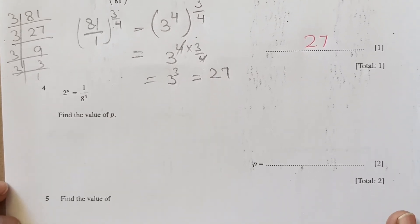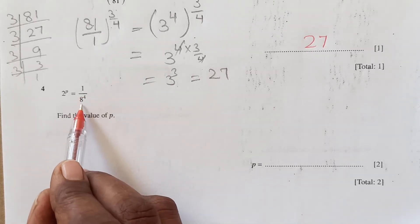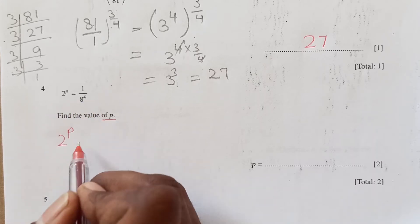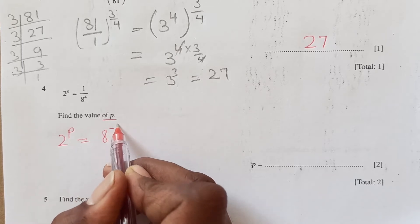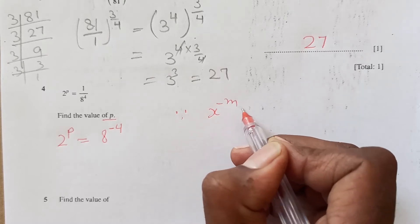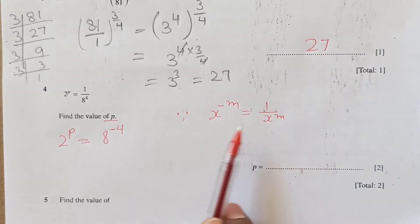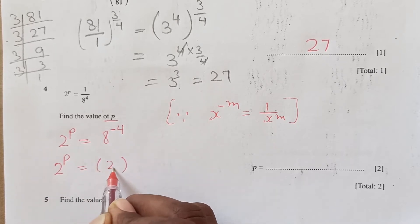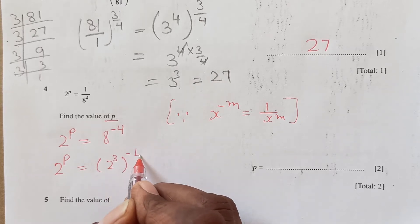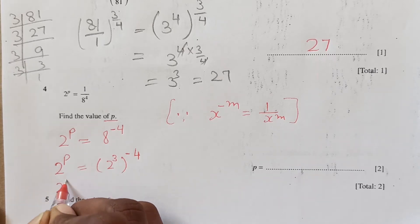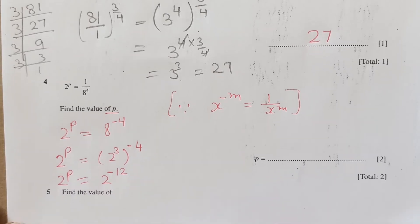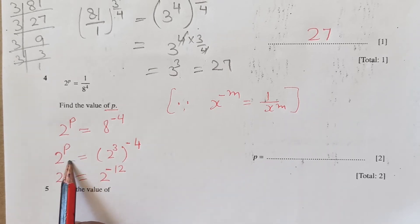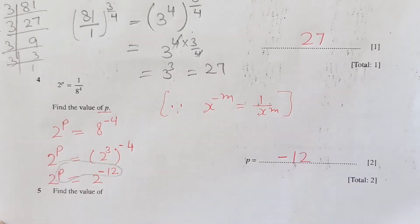Question 4: 2^p = (1/8)^4. Find the value of p. We can only find p if both sides have the same base. We rewrite (1/8)^4 as 8^(negative 4), since x^(negative m) = 1 over x^m. Now 8 = 2^3, so 8^(negative 4) = (2^3)^(negative 4) = 2^(negative 12). Both sides now have base 2, so we equate the powers: p = negative 12.